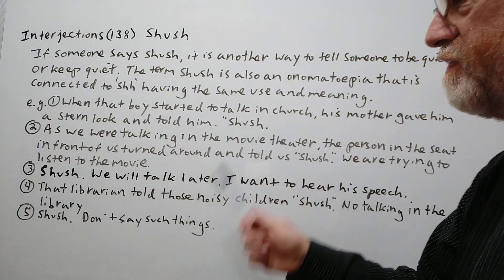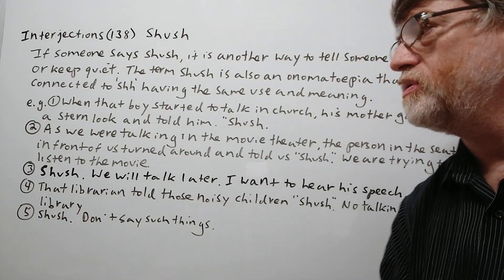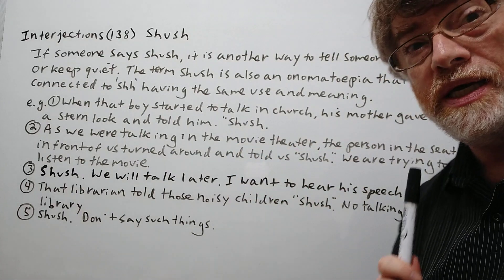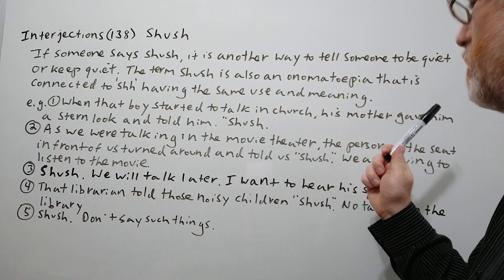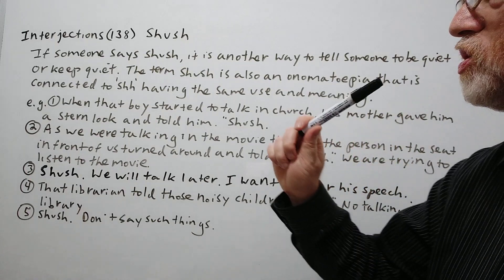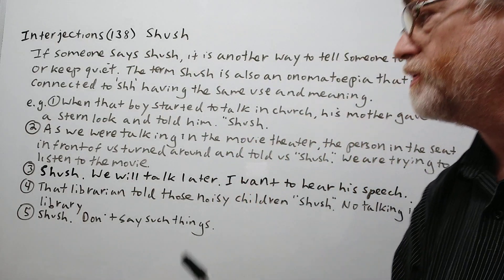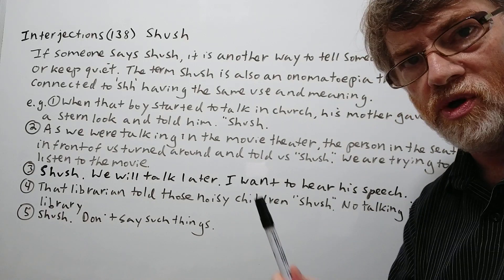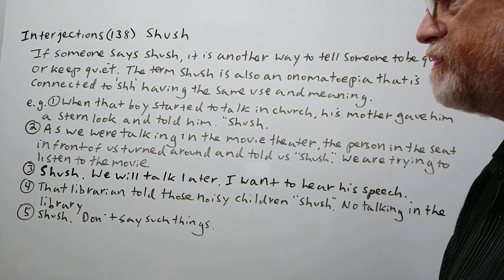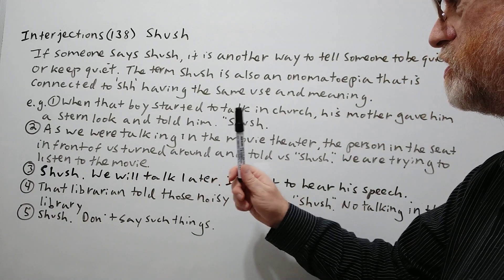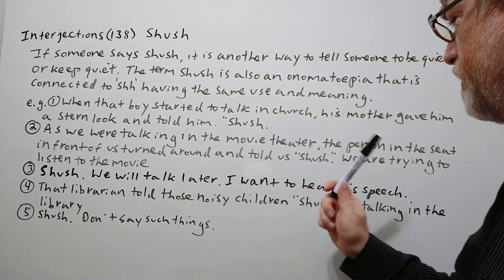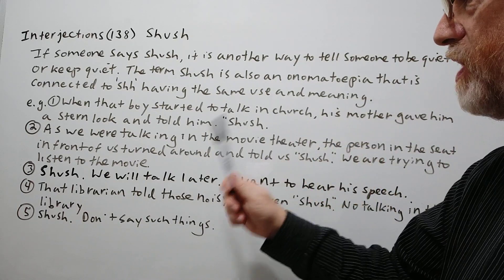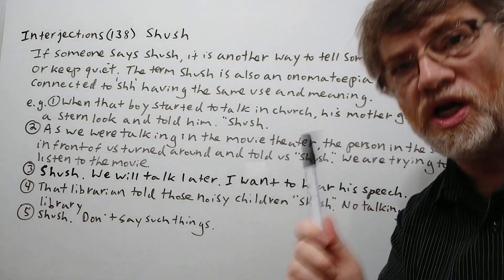We have five examples to show just how it is used. Number one: when that boy started to talk in church, his mother gave him a stern look — a serious look — and told him 'shush,' like no talking in church. Number two: as we were talking in the movie theater, the person in the seat in front of us turned around and told us to 'shush.'